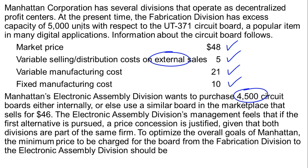Manhattan's electronic assembly division wants to purchase 4,500 circuit boards either internally or use a similar board in the marketplace that sells for $46. That $46 is actually a bit less than the market price of $48, but that may not be relevant. The electronic assembly division's management feels a price concession is justified given both divisions are part of the same firm. The question: to optimize overall goals, what is the minimum price to be charged from the fabrication division to the electronic assembly division?